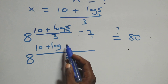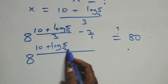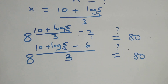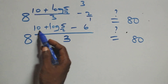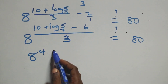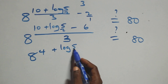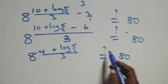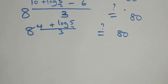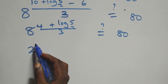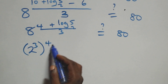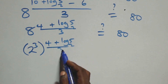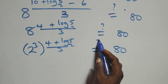Here, the exponent becomes: 10 minus 6 equals 4, so we have 8 raised to power [(4 + log₂ 5) / 3] equals 80. Also, 8 can be written as 2 raised to power 3, which is then raised to power [(4 + log₂ 5) / 3], equals 80. At this point, we have 2 raised to power (4 + log₂ 5) equals 80.